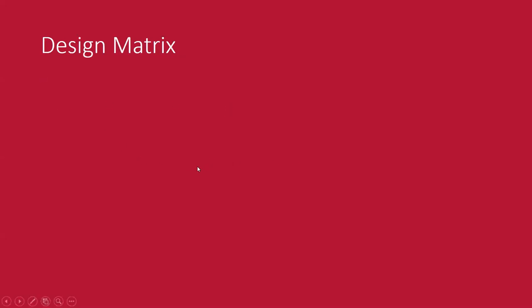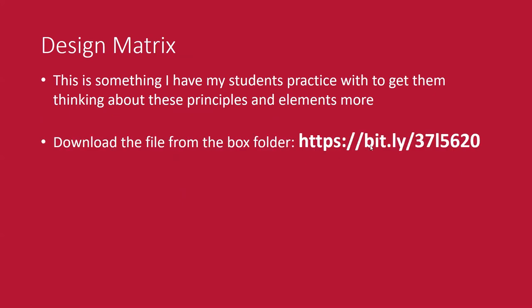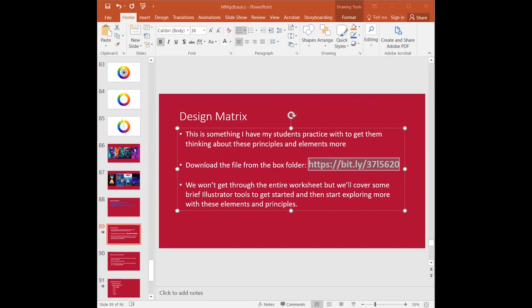A design matrix is something I like to spend a whole class period doing with my students — so we may not get through the whole thing, but it's a nice way to start thinking about these principles and elements more. There's a Box folder open to everyone. In that folder there should be a file called 'design matrix' — I usually have students fill it in themselves in Illustrator or find photos that represent the different elements and principles. Then I'm going to use this as a way to cover some brief Illustrator tools and then do a design thinking exercise.